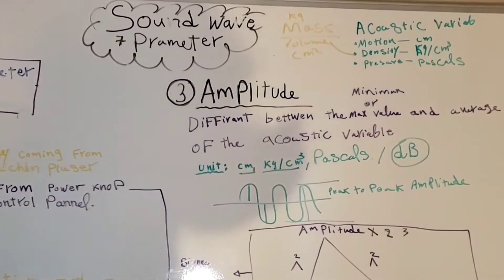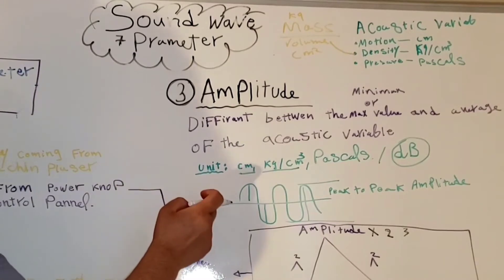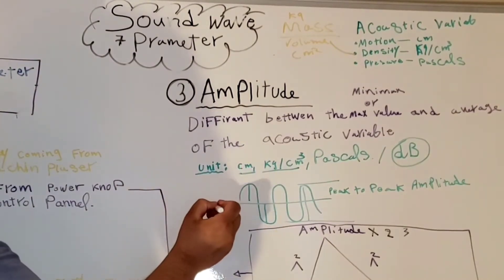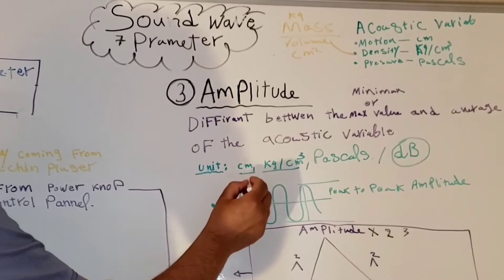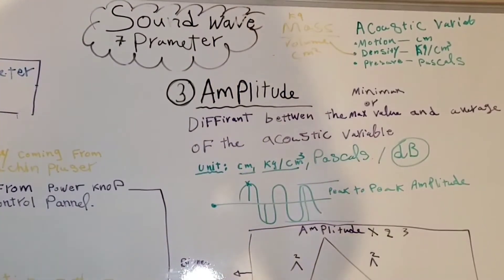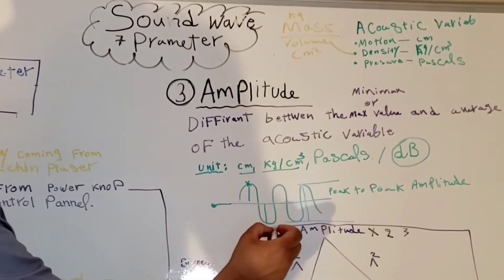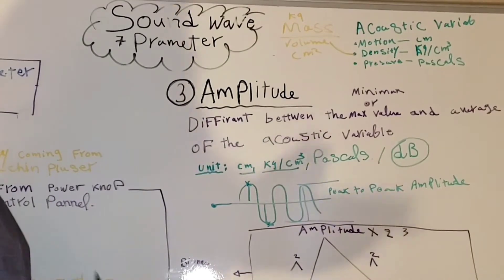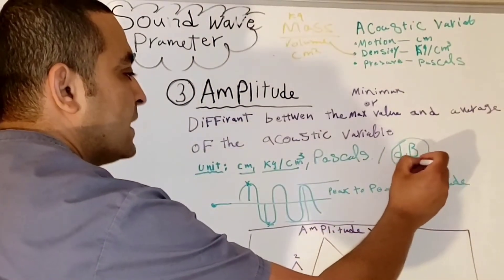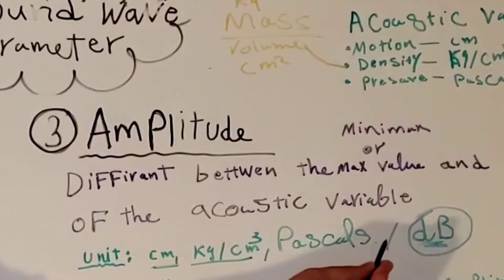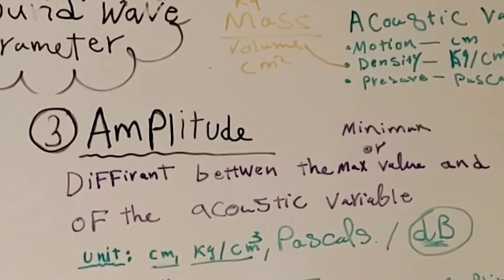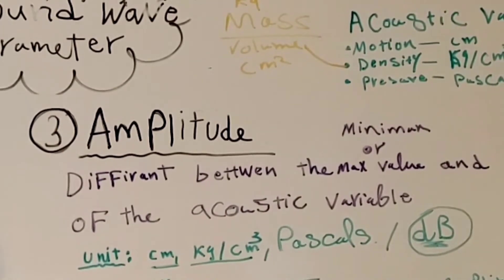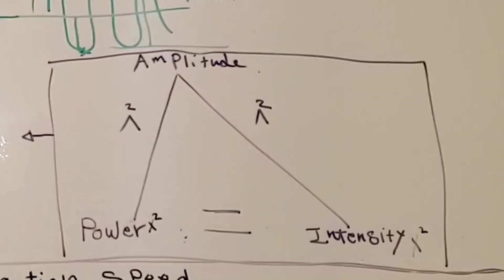We can also use the decibel for the amplitude. We use decibels because the amplitude is the difference between the average value and the maximum value. Because it is a difference between two numbers, we can use the decibel for the amplitude. If you want to know how to calculate the decibel, I made a video about logarithms and decibels which I'll put in the description below.